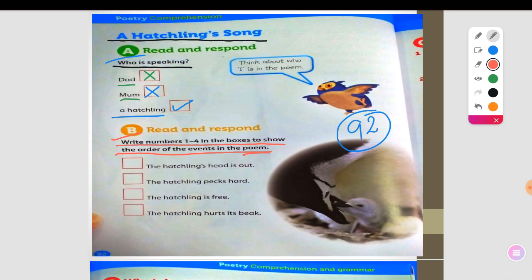So let's read the first sentence here. What is the first sentence? The hatchling's head is out. This is the first one. No. Let's continue reading. We have the hatchling pecks hard.